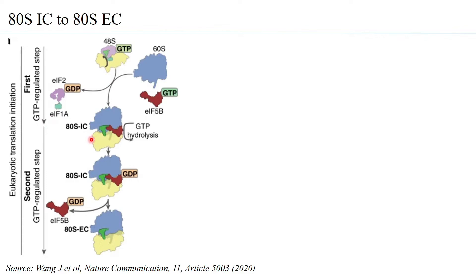During initiation, the 48S pre-initiation complex is formed, and this pre-initiation complex is able to bind the 60S subunit and EIF5B. This binding of the 60S to the 48S forms the 80S initiation complex. With the interaction of the 60S with the 40S, several conformational changes lead to hydrolysis of the GTP of EIF5B, and with hydrolysis to GDP, EIF5B releases itself from the 80S, converting the 80S initiation complex into the 80S elongation complex.